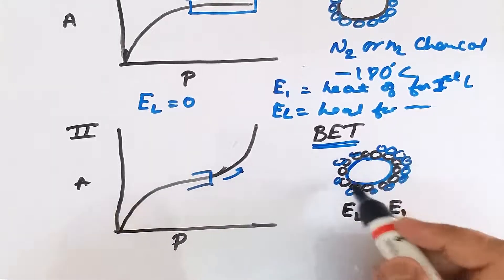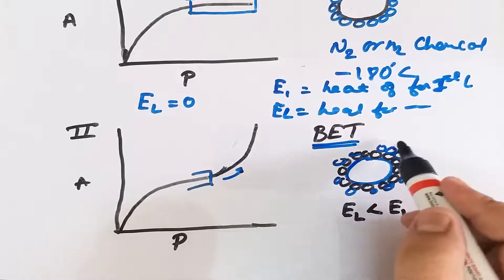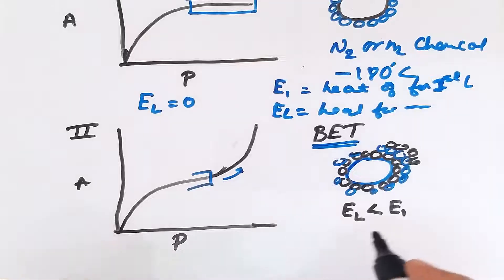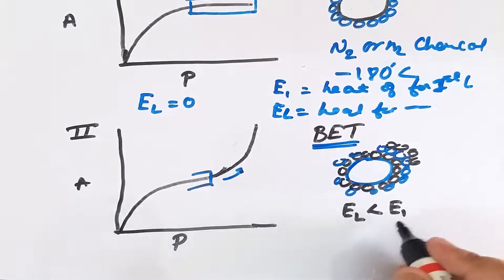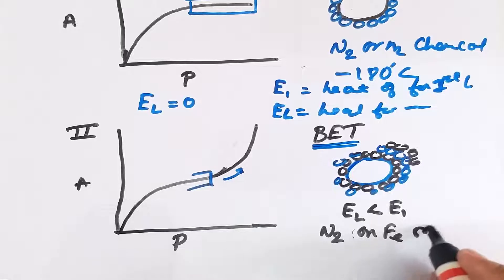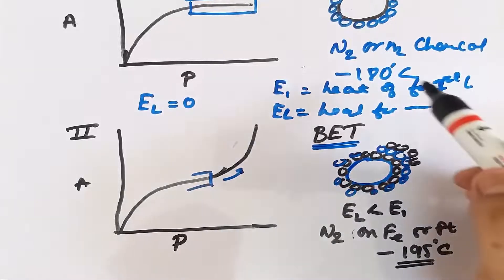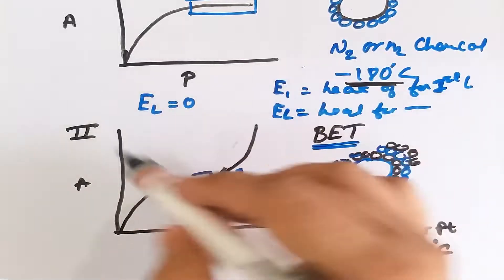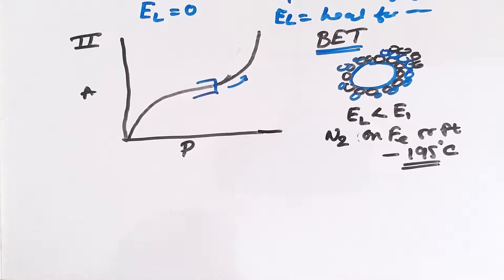In Type 2, the energy of liquefaction is less than the heat of adsorption for the first layer, because the first adsorption layer or monolayer forms first and then multilayer adsorption takes place. An example of this type is adsorption of nitrogen on iron or platinum catalyst at minus 195 degrees centigrade. It is important to always mention the temperature, as at a specific temperature only will this type of behavior be shown.